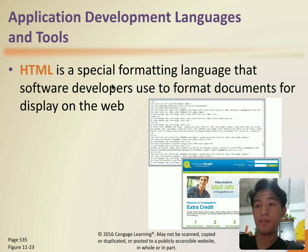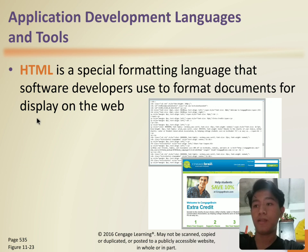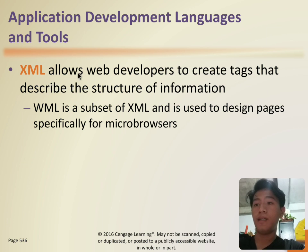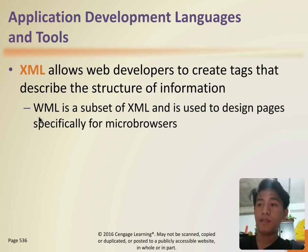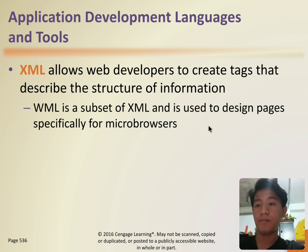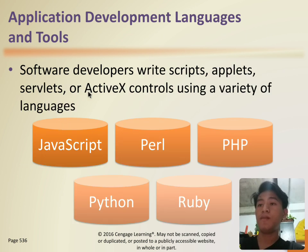HTML is a special formatting language that software developers use to format documents for display on the web. XML allows web developers to write tags to describe the structure of information. WML is a subset of XML that is used to design pages specifically for micro-browsers. Developers write scripts, templates, servlets, or ActiveX controls using a variety of languages.